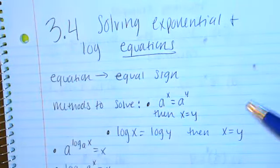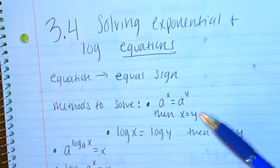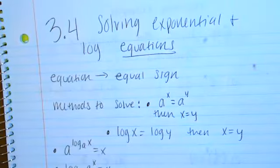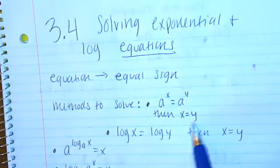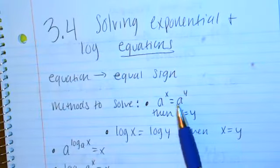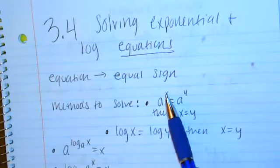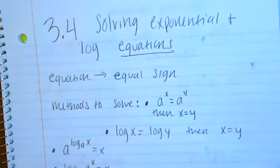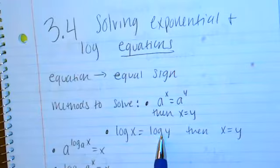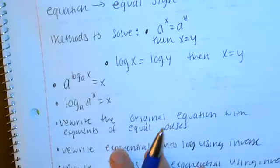There are a couple different methods of how we're going to solve these. The first is some properties. These are properties we've used all along, but I just want to remind you of them. The first one is that if we have two things of the same base, those exponents get set equal to each other. So if we have 2 to the fourth equals 2 to the x, then four would come down and x would come down, giving you four equals x. Same thing with logs: if you get two logs on different sides of the equal sign with the same base, you can drop the logs and set x equal to y.